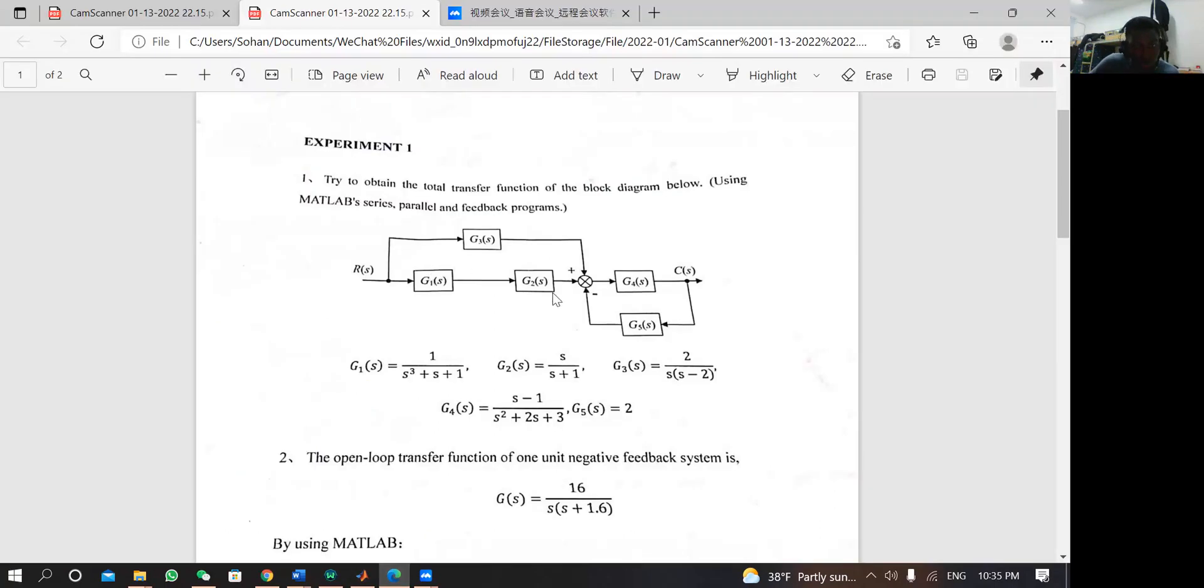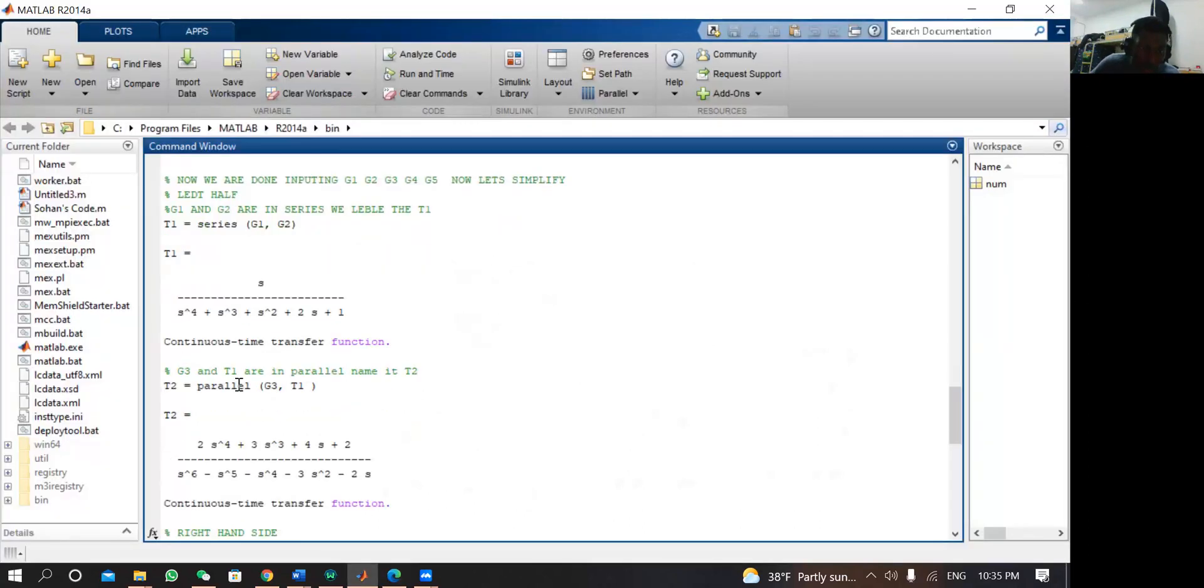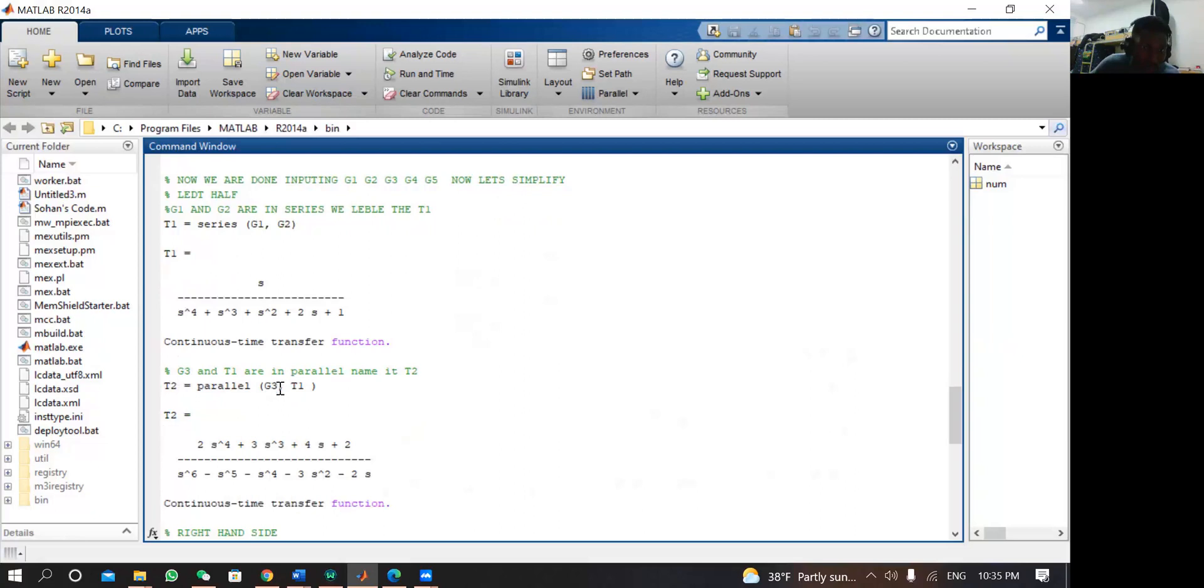Now when we combine here in series, we get only one value here which is T1. Now this T1 is in parallel with G3, so we are going to combine these two in parallel. T2 is parallel, G3 is parallel to T1. Remember T1 is G1, G2 in series, so G3 parallel T1. This is the transfer function for that.